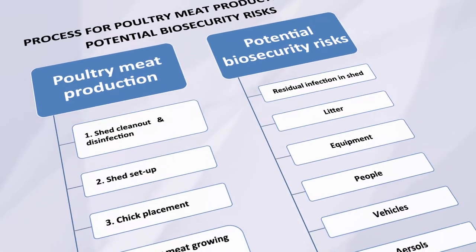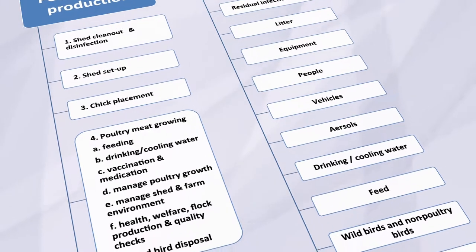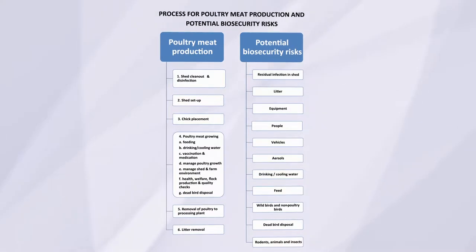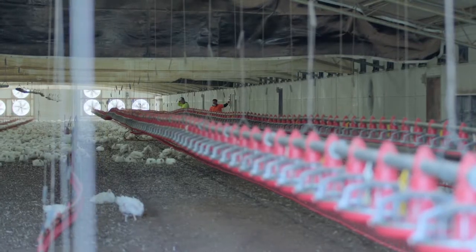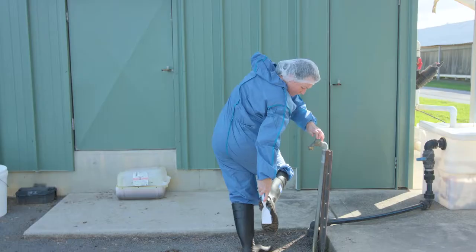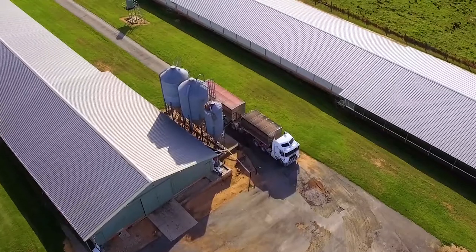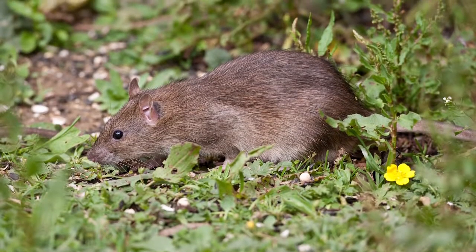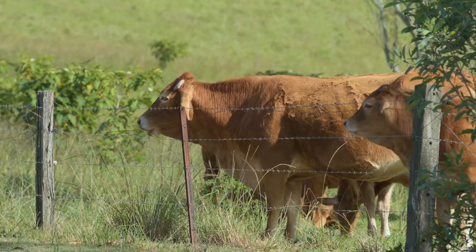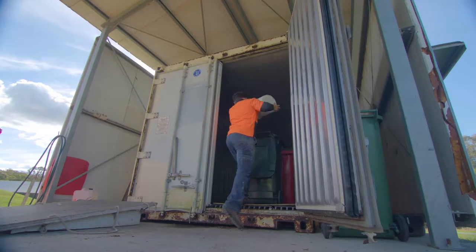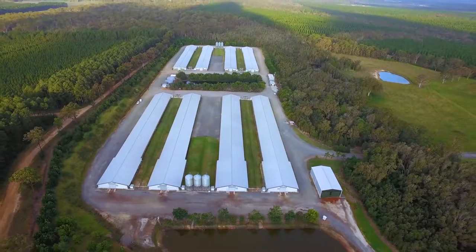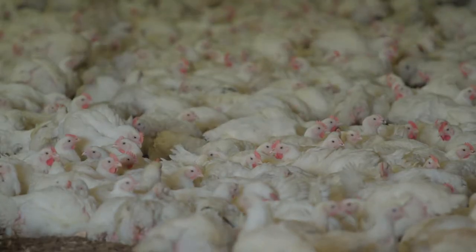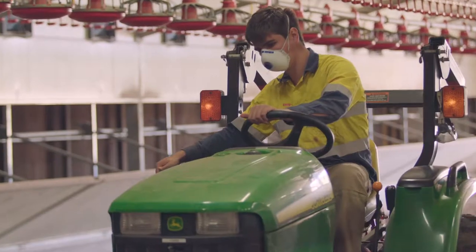Poultry meat production has a number of process stages and biosecurity risks can occur in each stage. The potential for disease to enter or exit the property represents the greatest risks. The main ways that pathogens spread is through contaminated people, contaminated vehicles and equipment, contaminated litter, wild birds, rodents, feral animals, insects, livestock and domestic pets, contaminated feed and water, poultry movement including mortalities, and through the air. We'll look at each area and show how these biosecurity risks can be managed to prevent or minimise disease and pathogen spread.